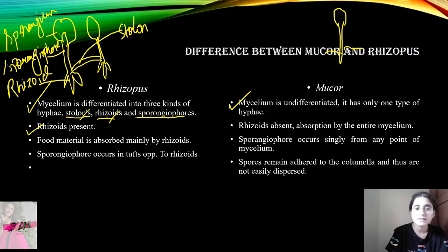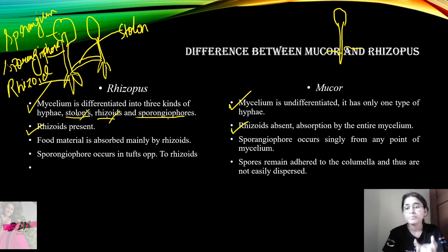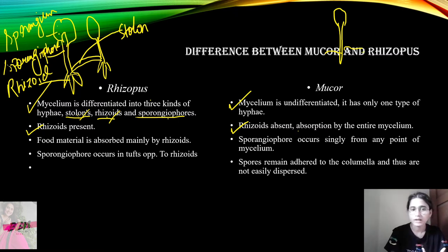The second point is that rhizoids are present in Rhizopus, but rhizoids are absent in Mucor — you will not get any rhizoids here. So if the rhizoids are absent, the absorption of nutrients will be carried out by the entire mycelium — all parts will be absorbing. But in the case of Rhizopus, it is the rhizoids that carry out absorption.